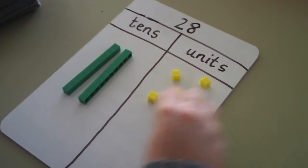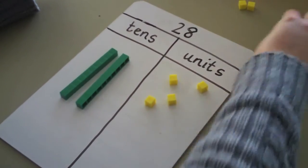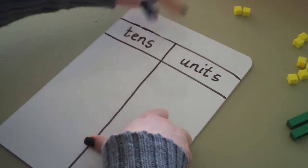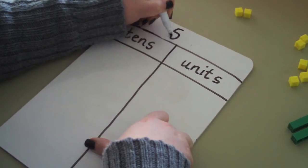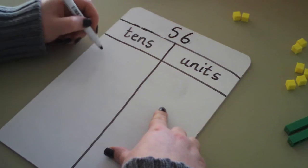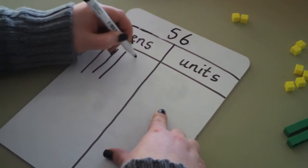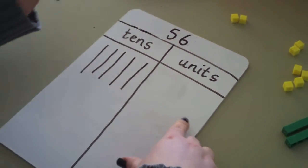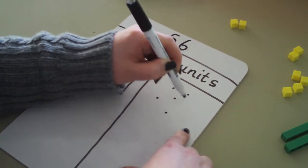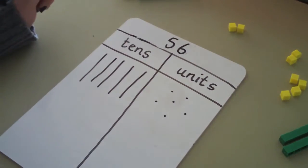If you're practising this at home, you can simply draw the tens and units. For example, 56. 56 has got 5 tens and 6 units. Together they make 56.